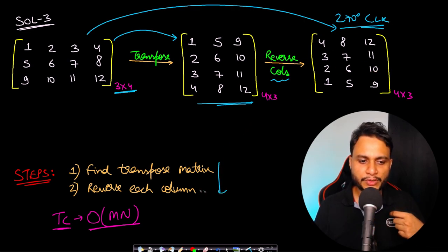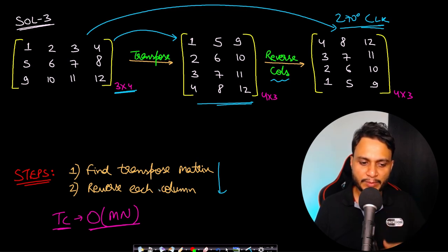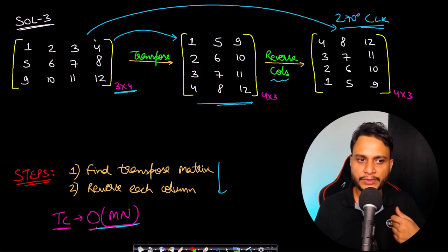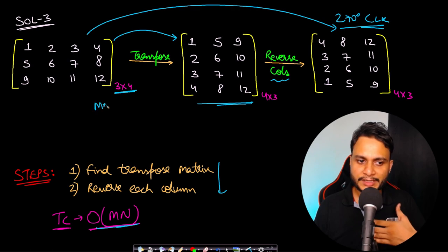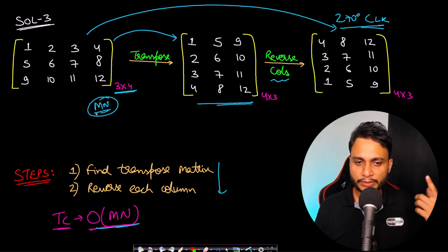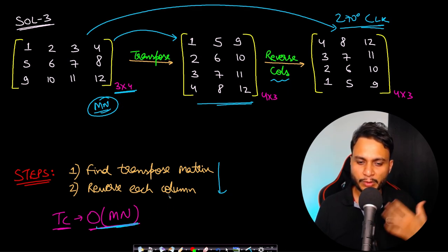This is just a two-step process: finding the transpose of the matrix and reversing each column. The time complexity is O(mn) because we go through all M×N elements exactly two times, so the total time complexity is O(mn).